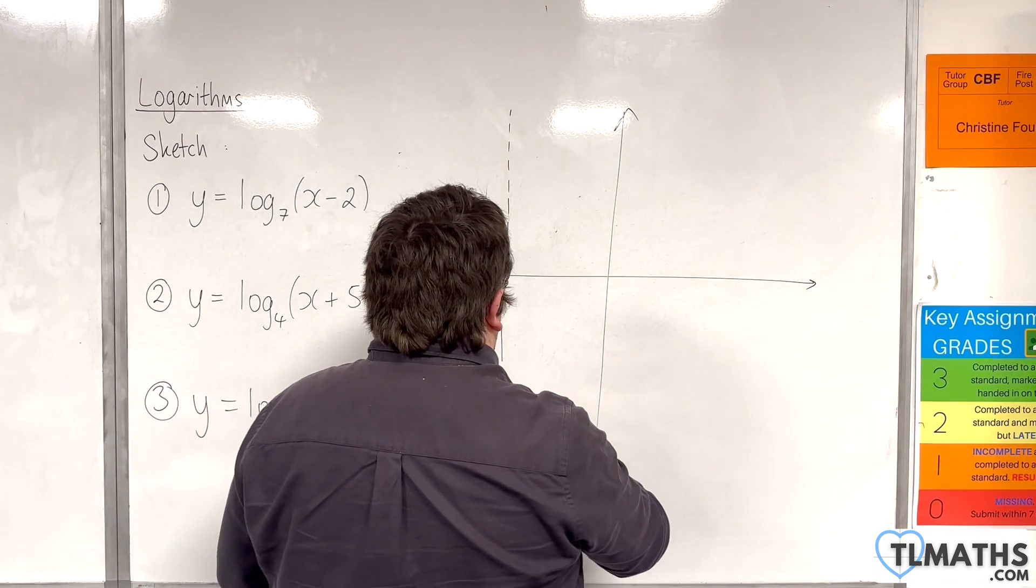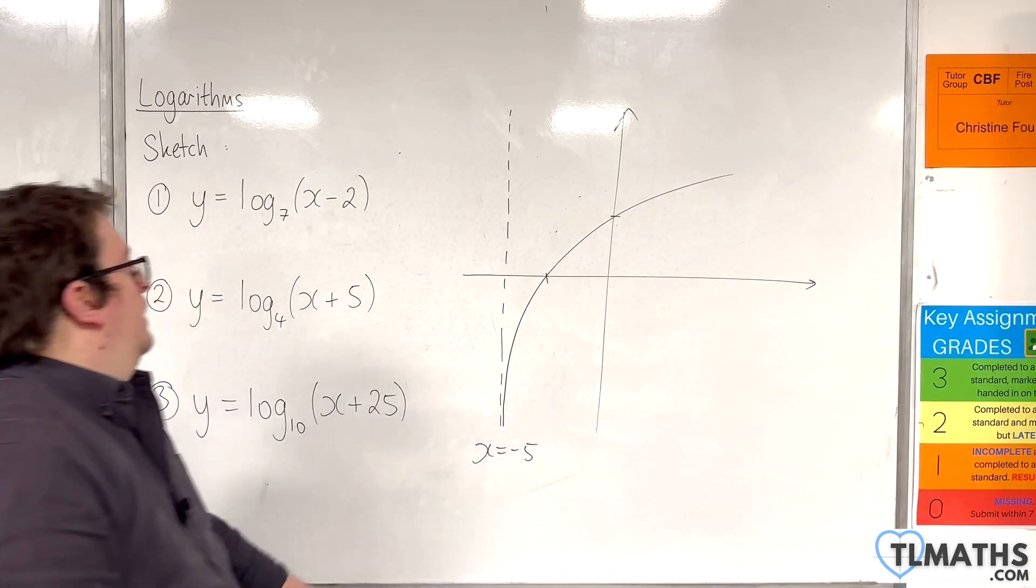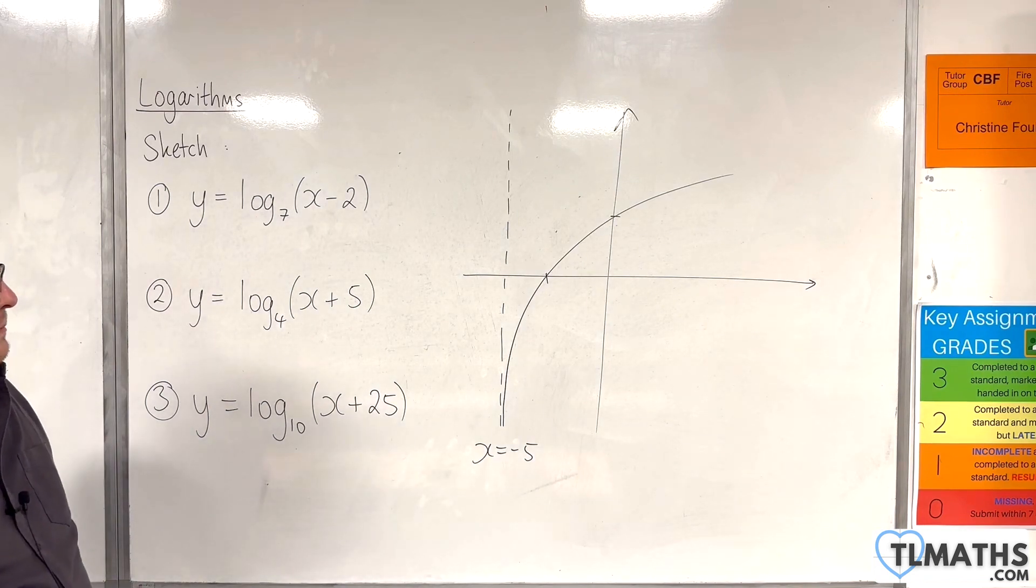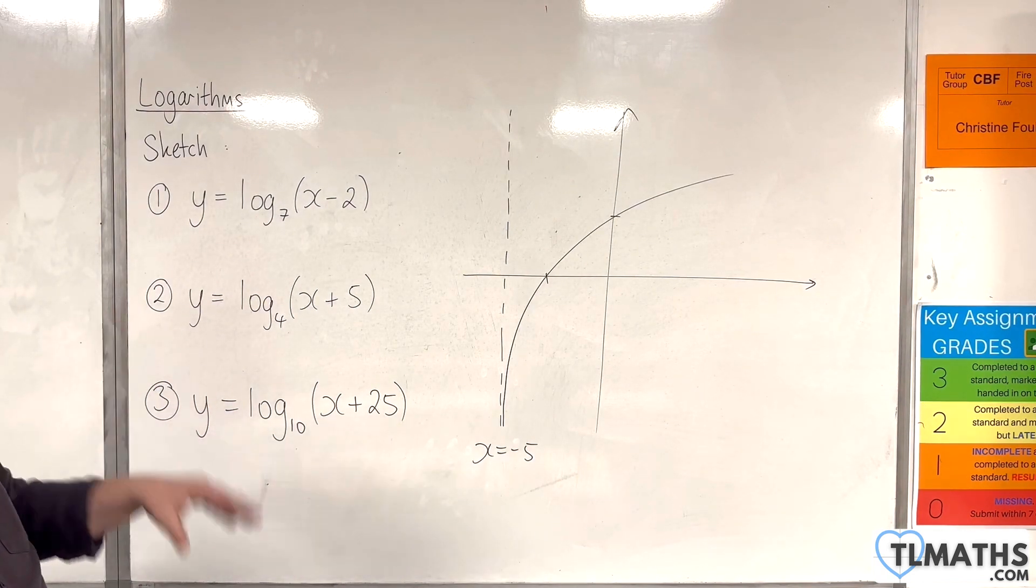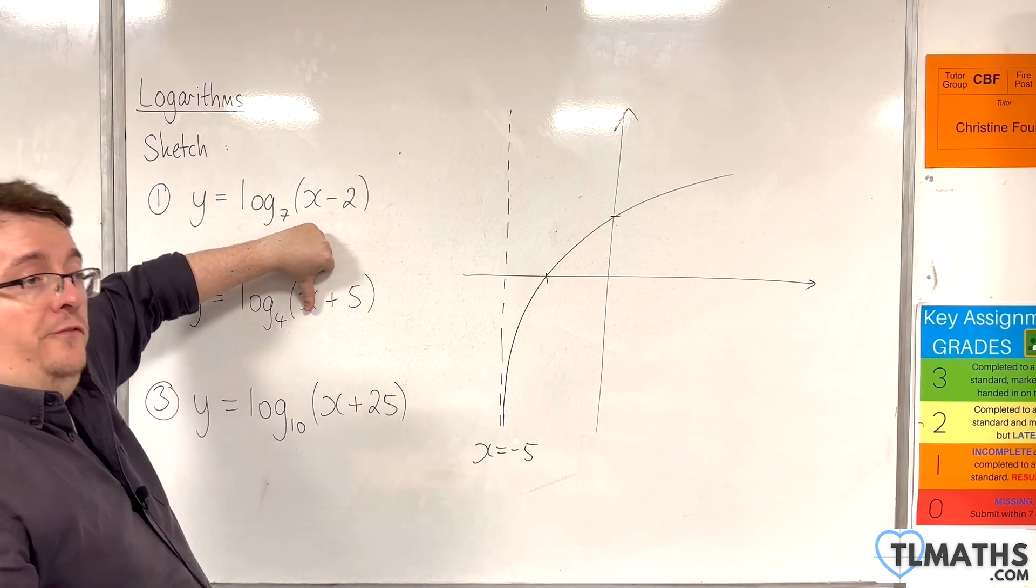So our logarithmic curve will look something like this. So where does it cross the y-axis? Well, that's when x is 0. So that will be log base 4 of 5.